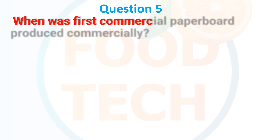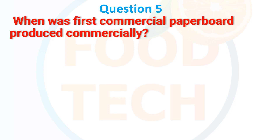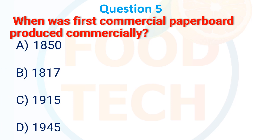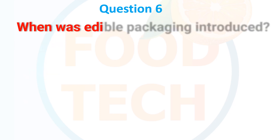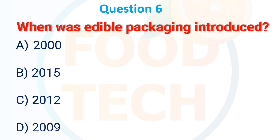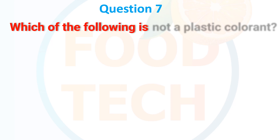When was the first commercial paperboard produced commercially? A) 1850, B) 1817, C) 1950, D) 1945. The answer is B) 1817. Which year was a particular development achieved? A) 2000, B) 2015, C) 2012, D) 2009. The answer is C) 2012.